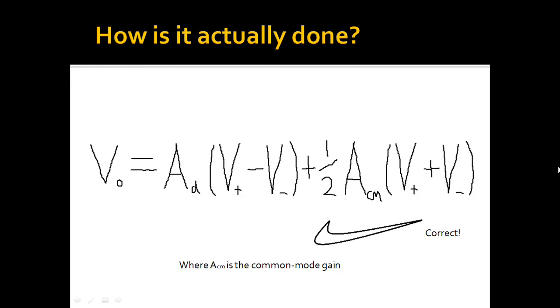To account for the common mode gain, the average of the input voltages is amplified by ACM. ACM is typically much lower than the differential gain of AD, and comparing these values gives rise to what we term as the Common Mode Rejection Ratio, or CMRR for short.